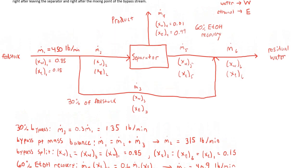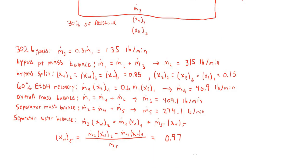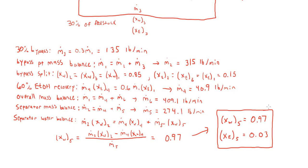Now we know all the mass flow rates and all compositions except for streams 5 and 6. To calculate the composition of stream 5, I'm going to do a species balance around the separator on water to calculate the mass fraction of water in stream 5. Doing that, the residual water stream directly leaving the separator is 97% water. Since this is a binary stream with water and ethanol, the ethanol must be 3%. This is our final answer for the composition of the residual water stream directly out of the separator.